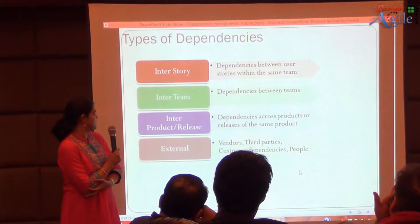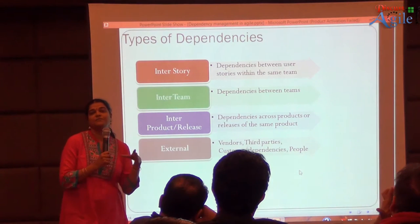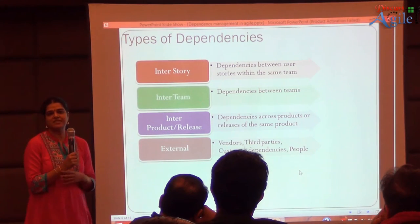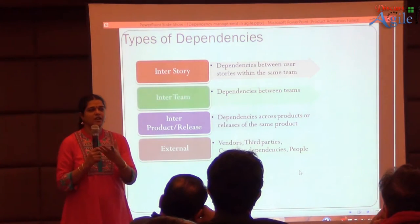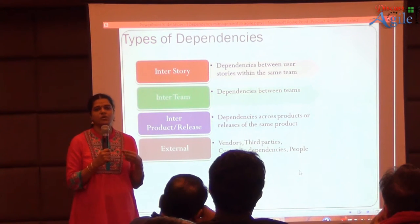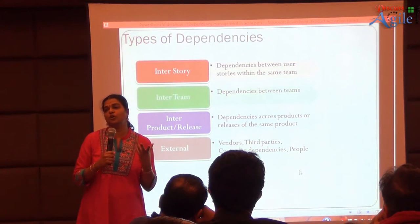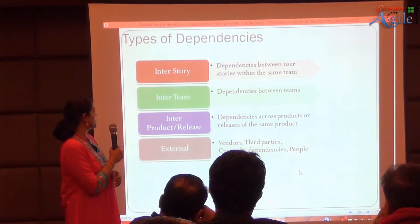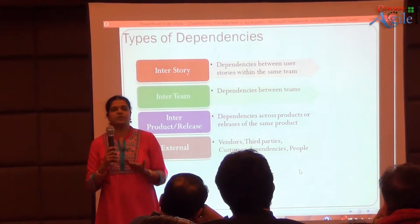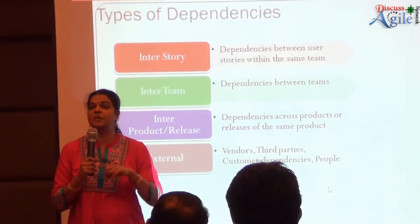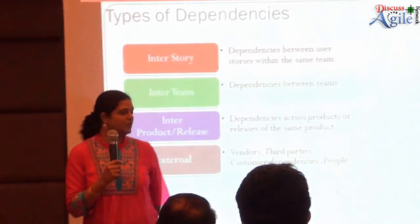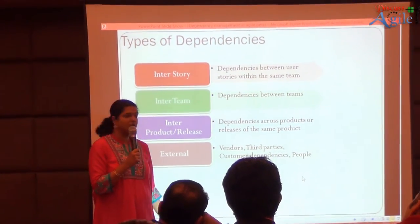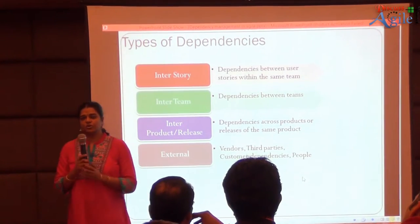What are the different types of dependencies? One is inter-story — dependencies between stories. Next is inter-team — dependencies between teams, where one story has a data dependency on a story done by another team, especially in bigger frameworks. Another is inter-product or release, where a team working on one product may depend on another product. And then there are external dependencies — vendors, third parties, customer dependencies, or even people dependencies.